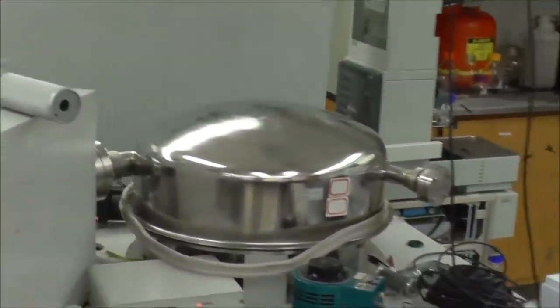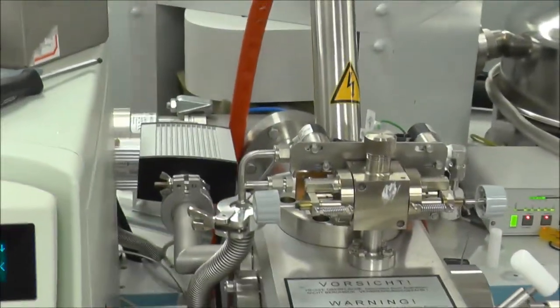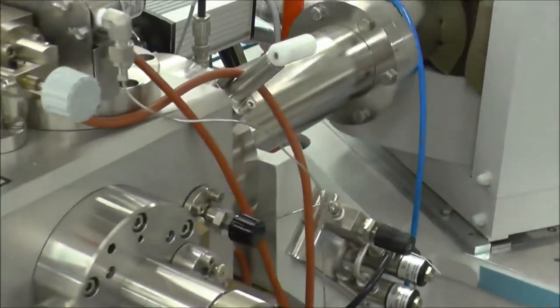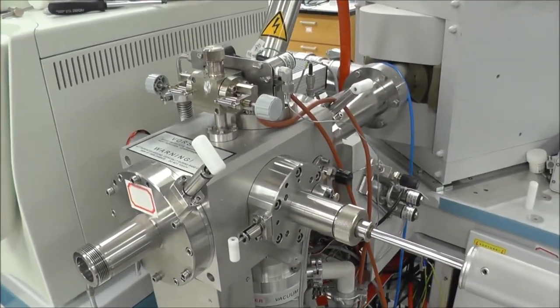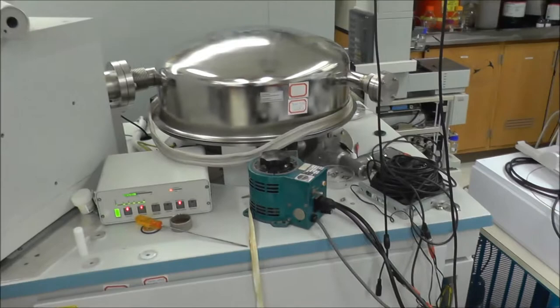So if you see this big magnet here, the ions come in, the magnet makes them turn, the radius is determined by their mass and how the magnet's tuned up to, and we detect them there. So we can scan the magnet and count all the ions.